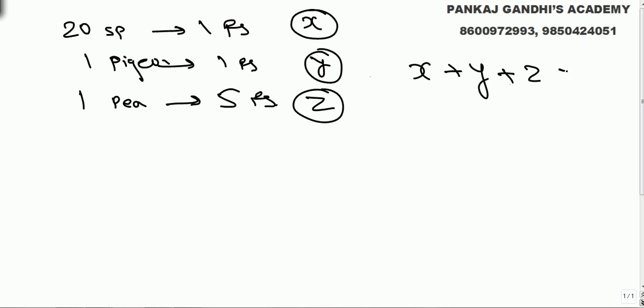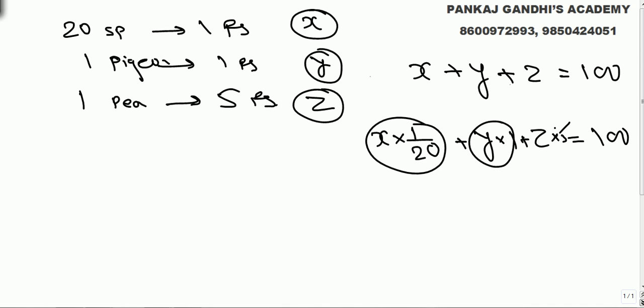What we need is total number has to be 100 and total amount. How we get amount? Rate into quantity: x sparrows per sparrow 1 by 20 rupees, y pigeons y into 1, and z into 5. This amount, this amount, and this amount total is 100 rupees.